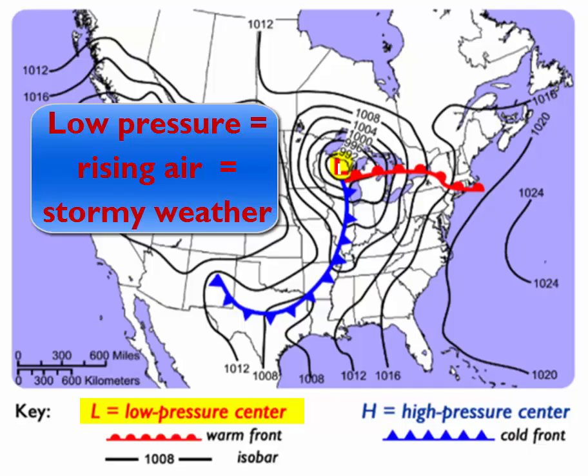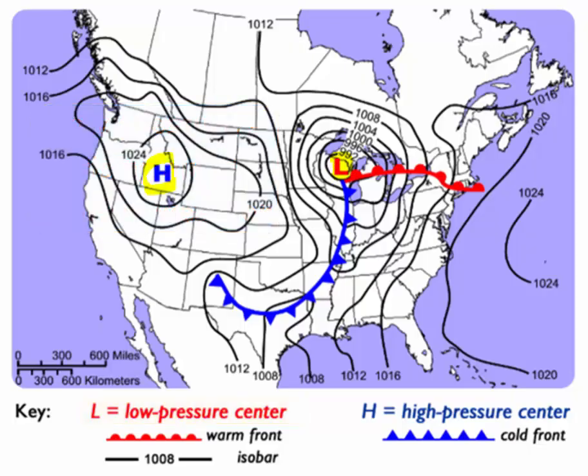So the L, our low pressure area, is going to mean cloudy, stormy weather, and H is going to mean sunny, fair weather.